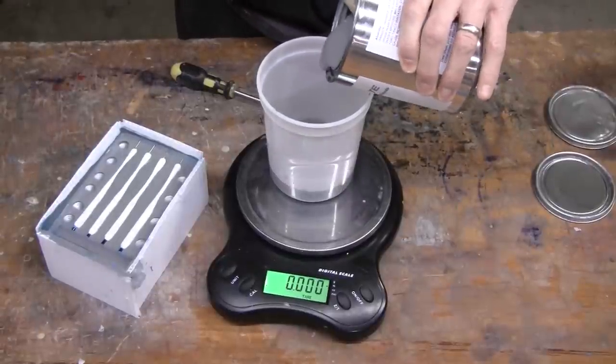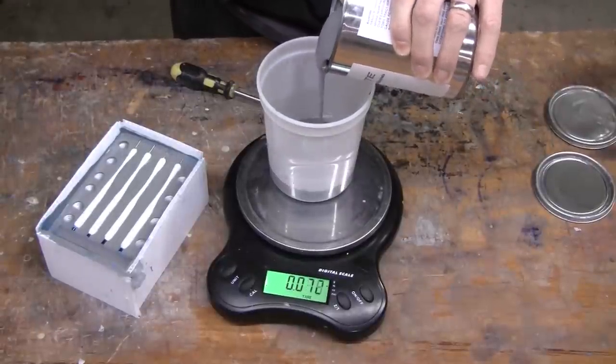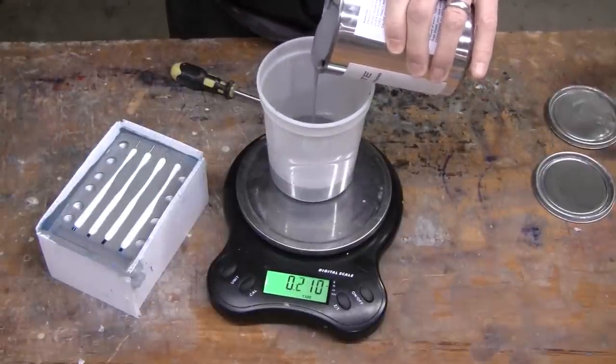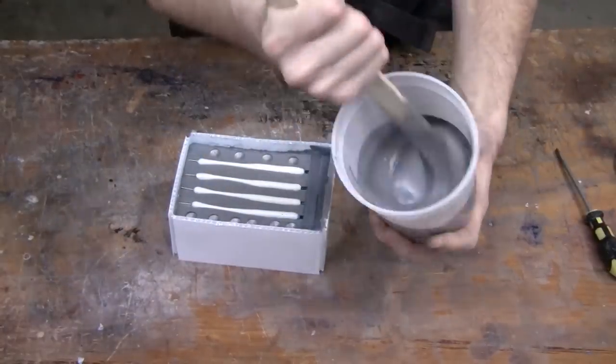Once again, we make sure that VAC50 is agitated. We measure out equal amounts, mix it thoroughly, and we're ready to pour.